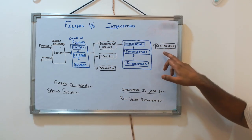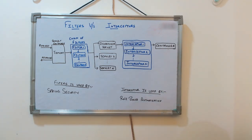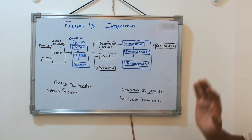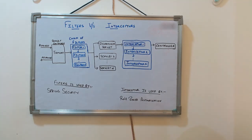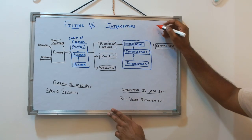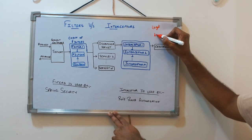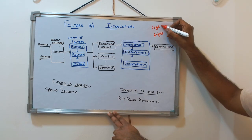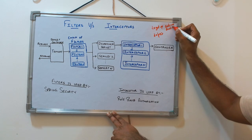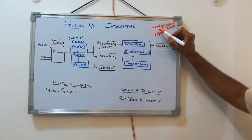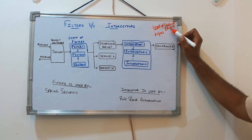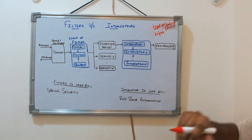Today we have controllers — order controller, invoice controller, different controllers. Any API comes in: if it's an order API, go to order controller; if it's an invoice API, go to invoice controller. But way back in 2015 and 2016, there was nothing like a controller, no Spring Boot. We used to have a servlet with do-get and do-post methods, and inside the get method we put if-else conditions: if it's an order API do this, if it's an invoice API do this.